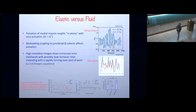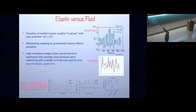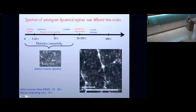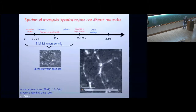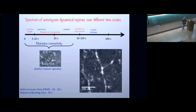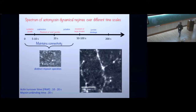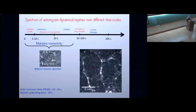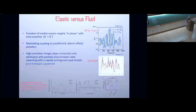The question is whether this actin-myosin meshwork should be treated as an elastic meshwork or a fluid. Our arguments for viewing it as an elastic meshwork at short timescales are the following: as the myosin pulsates, the area changes. So the area is the response to the force generators of myosin — I can view myosin as generating forces which give rise to area shrinkage of each cell.